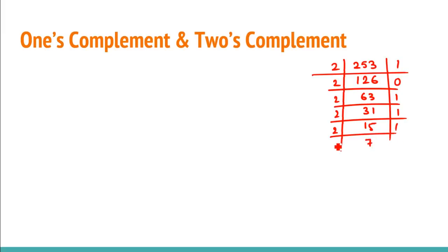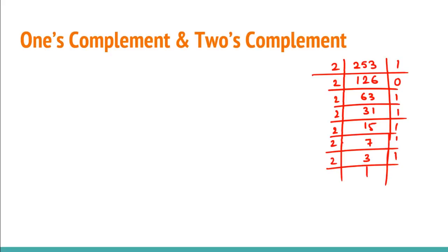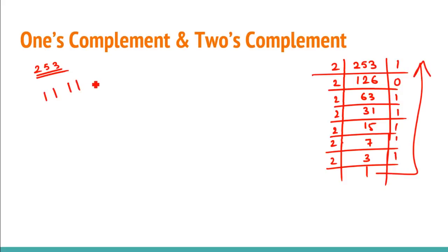You continue this process until you eventually reach one or zero. The binary of 253 is obtained by writing the remainders in reverse order, giving you 11111101 in base two. This is the binary representation of 253.